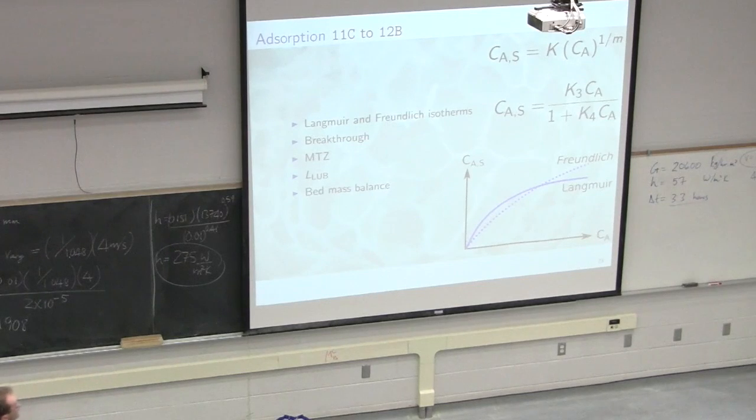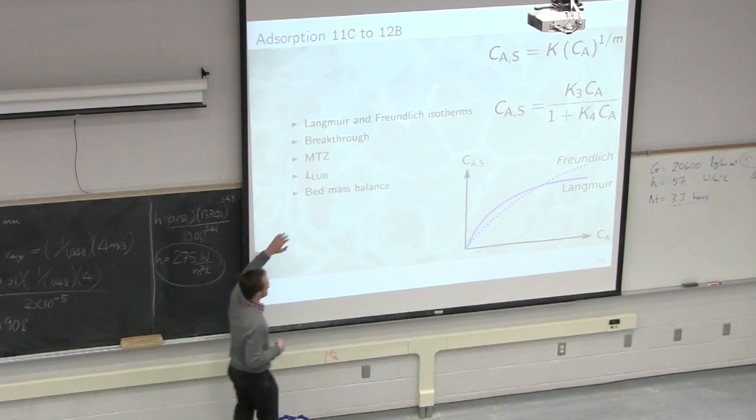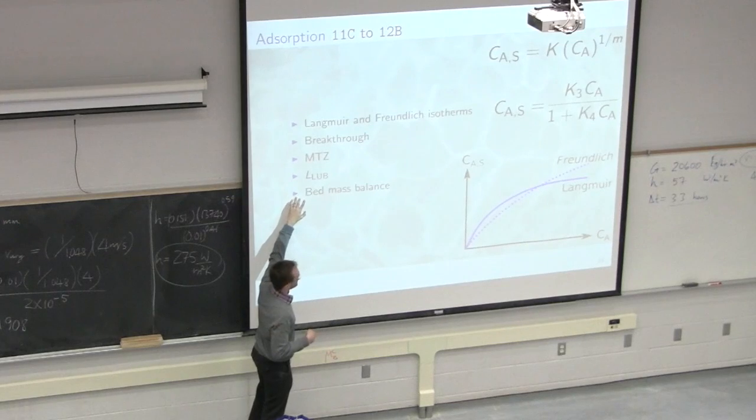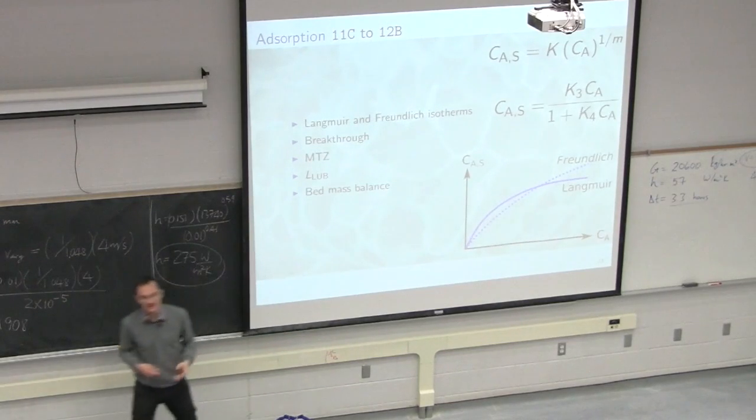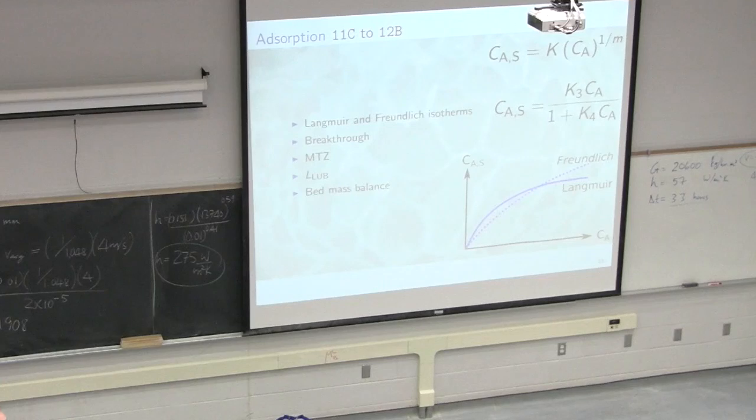Our second last topic was adsorption. We were looking at several isotherms. The isotherm simply is a statement of equilibrium. And there's at least Langmuir and Freundlich as well as linear isotherms could be used, and they tell us how our fluid concentration is related to the adsorbed concentration. And from that we used those isotherms and we designed lengths of the bed required to achieve a given adsorption. And adsorption is typically batch based. We load material onto the adsorbent, stop and regenerate.